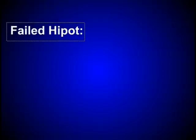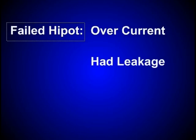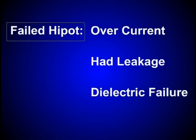When a cable fails the HIPOD test, Cirrus testers display one of three errors: overcurrent, had leakage, or dielectric failure.